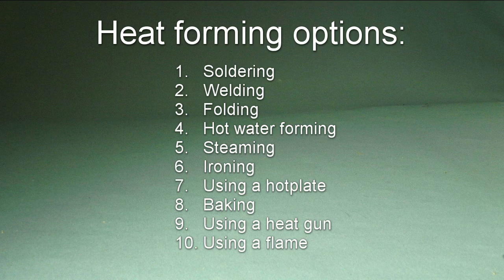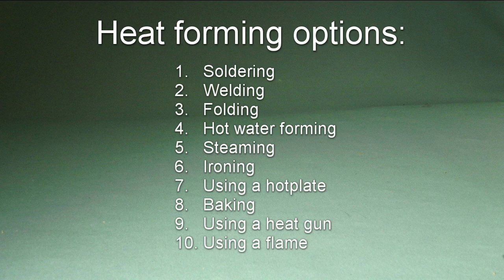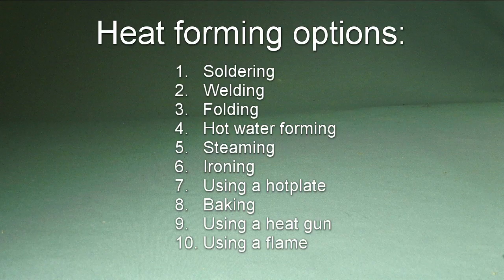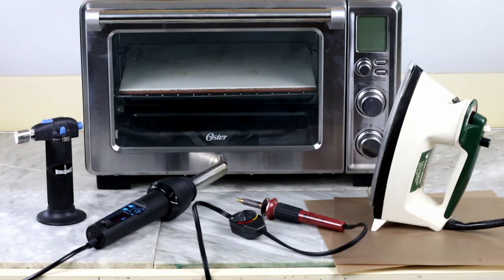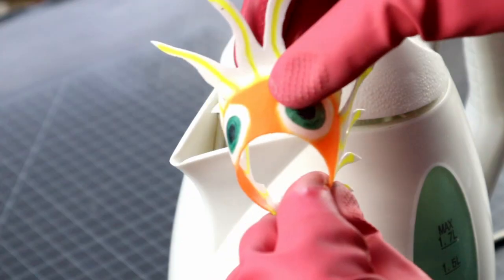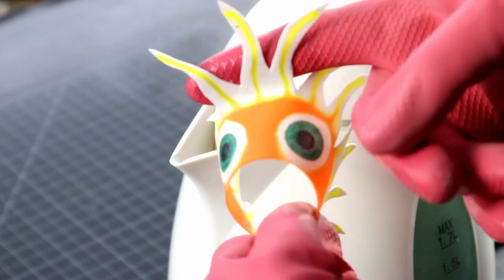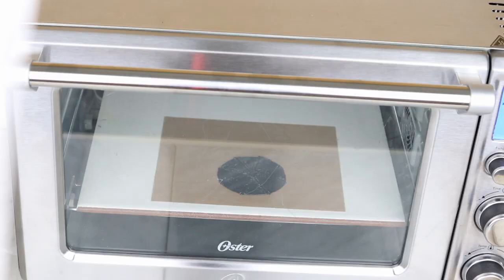All of them use some form of heat. And which one you choose will obviously depend on the project. Most of the time it will be a combination of some of these. Heat forming is all about how much heat you need to apply and where. Do you need it just soft enough to bend? Or do you need it completely melted?